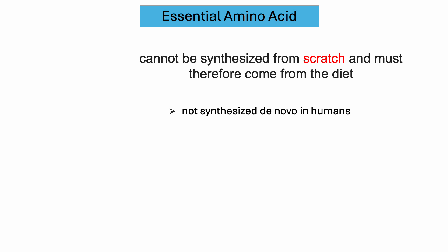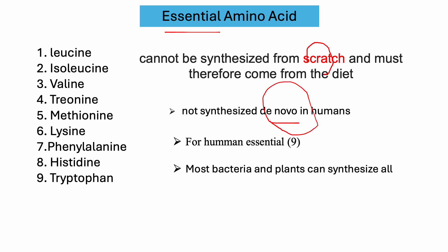From the name we can easily identify that essential amino acids cannot be synthesized from scratch and must therefore come from the diet, especially for humans. Humans cannot synthesize these de novo — de novo means from the very beginning. These nine are considered essential amino acids for humans: leucine, isoleucine, valine, threonine, methionine, lysine, phenylalanine, histidine, and tryptophan. For plants and bacteria, they can synthesize all of these, so these are not essential for plants and bacteria.